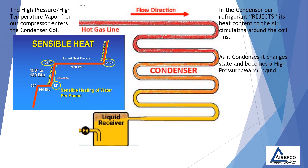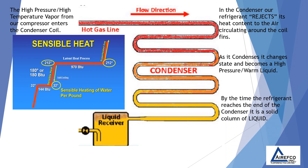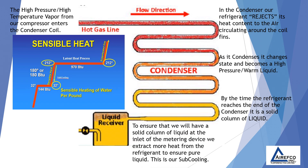In the condenser, our refrigerant rejects its heat content to the air circulating around the coil fins. As it condenses, it changes state and becomes a high-pressure, warm liquid. By the time the refrigerant reaches the end of the condenser, it is a solid column of liquid. To ensure that we will have a solid column of liquid at the inlet of the metering device, we extract more heat from the refrigerant to ensure pure liquid. This is our subcooling.